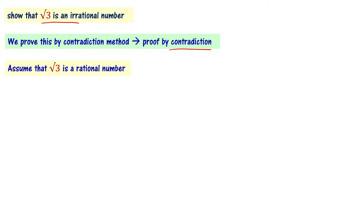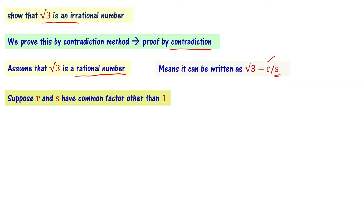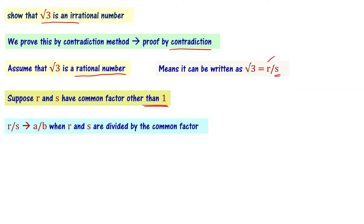If root 3 is rational, it can be expressed as a ratio of two integers r and s, so root 3 equals r by s. Suppose r and s have no common factors other than 1. If they do share a common factor, we divide it out and call the result a by b, where a and b have no common factor other than 1.